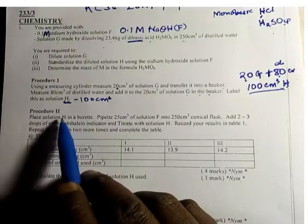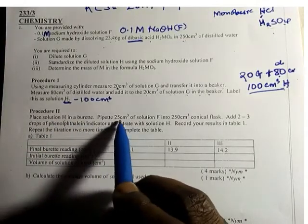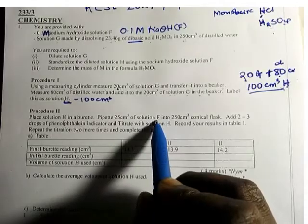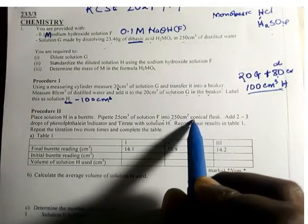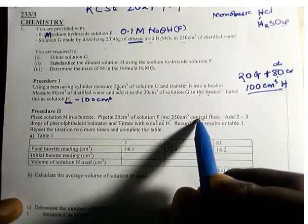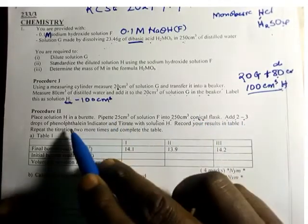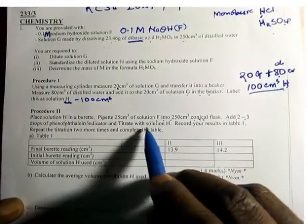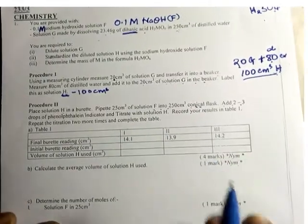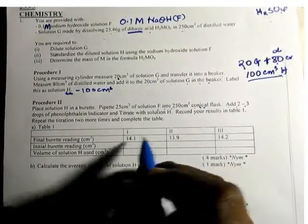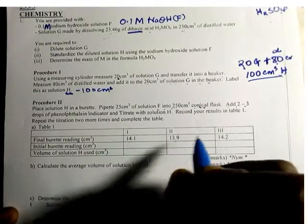Procedure two: place solution H in a burette. Pipette 25 cm³ of solution F into a 250 cm³ conical flask. Add 2 to 3 drops of phenolphthalein indicator and titrate with solution H. Record the results. The results were recorded and we have readings to one decimal place.